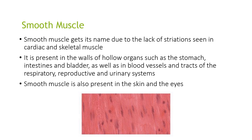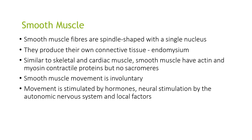Smooth muscle is called smooth because of the lack of striations seen in cardiac and skeletal muscle. It is present in the walls of hollow organs such as the stomach, intestines and bladder, as well as the blood vessels and tracts of the respiratory, reproductive and urinary systems. Smooth muscle is also present in the skin and the eyes. The cells are spindle-shaped with a single nucleus and produce their own connective tissue known as endomysium. Like skeletal and cardiac muscle, smooth muscle has actin and myosin contractile proteins but no sarcomeres. Smooth muscle movement is involuntary and is stimulated by hormones, neurostimulation by the autonomic nervous system and local factors.